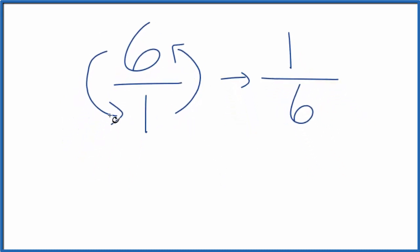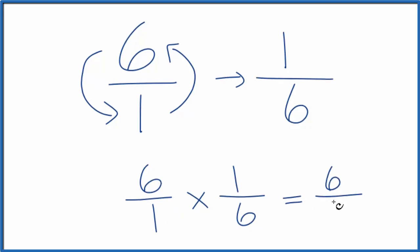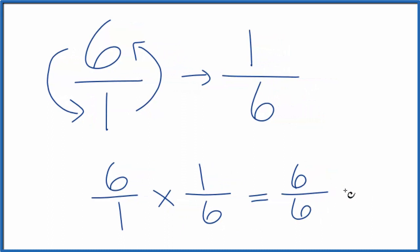And we can check that. We can take the original number, 6, let's call it 6 over 1, and multiply that by the reciprocal we got. If we did it correctly, we should end up with 1. 6 times 1 is 6, 1 times 6 is 6. And if you divide 6 by 6, you get 1. So we did the first part correctly. The reciprocal for 6 is 1 over 6.